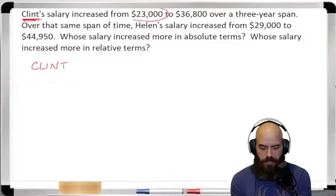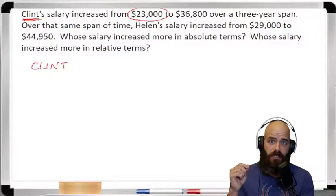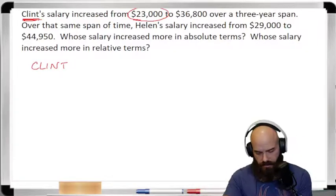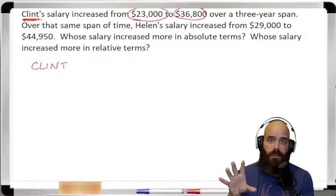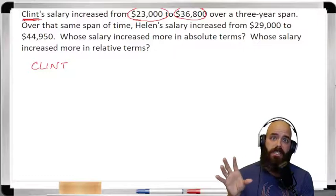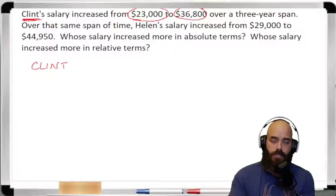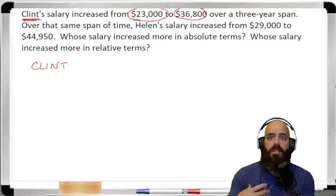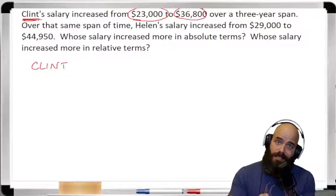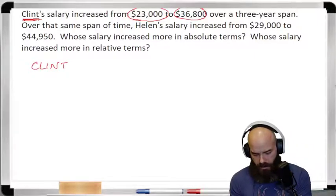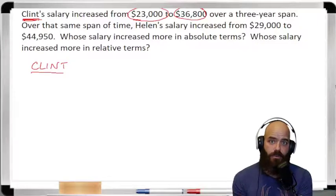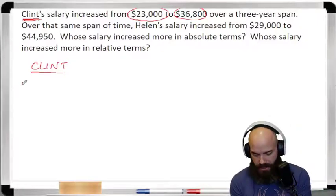Clint's salary at the beginning of this three-year span was $23,000. At the end of the three-year span it had risen up to $36,800. The first thing I want to know is how much of a pay raise did he get in absolute terms — in other words, how much money over that three-year span did he accumulate in raises? We're going to call that the absolute difference.